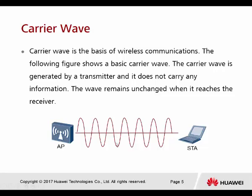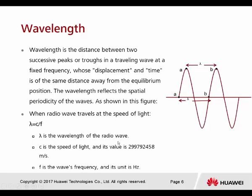This is the radio wave, and here we have a wavelength. The wavelength is calculated from the peak on top — you can see from A to B, marked as lambda. The wavelength is the distance between two successive peaks of a traveling wave at a fixed frequency.